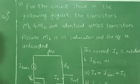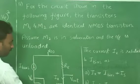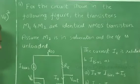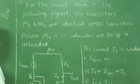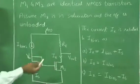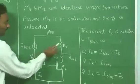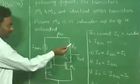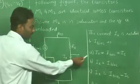For the circuit shown in the figure, the transistors M1 and M2 are identical NMOS transistors. It is given to assume M2 is in saturation. The current Ix is related to I_bias as option A: